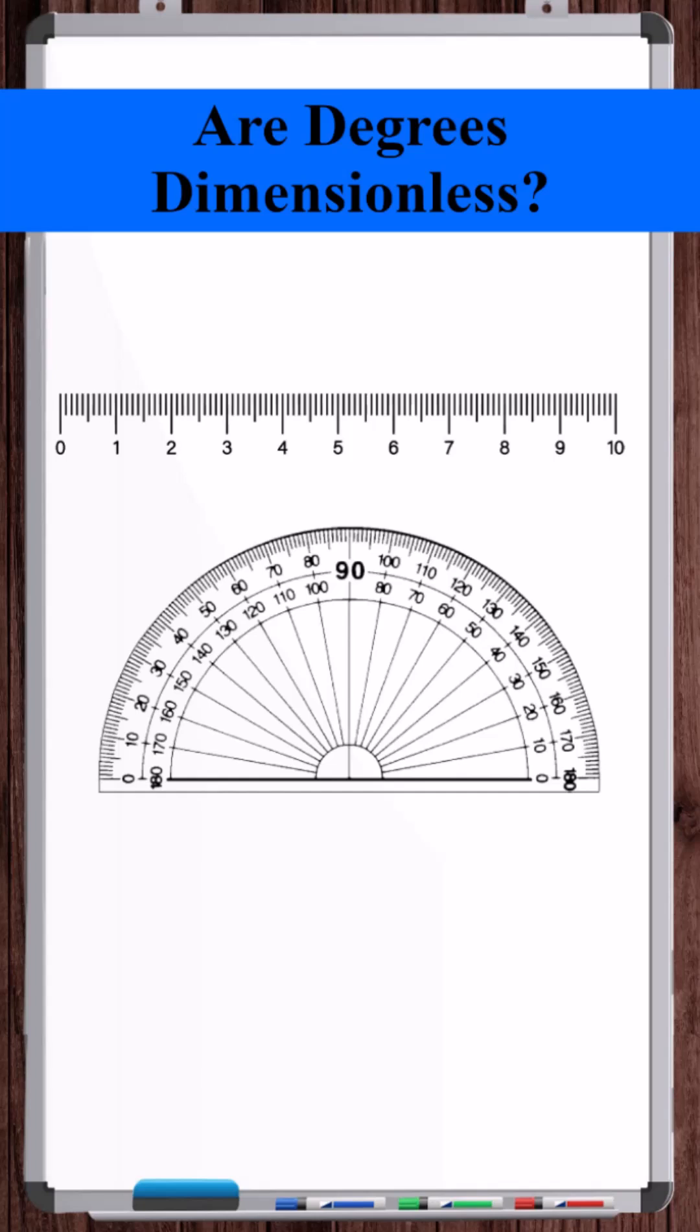We know that radians are dimensionless, but what about degrees or any angle? Are angles dimensionless?